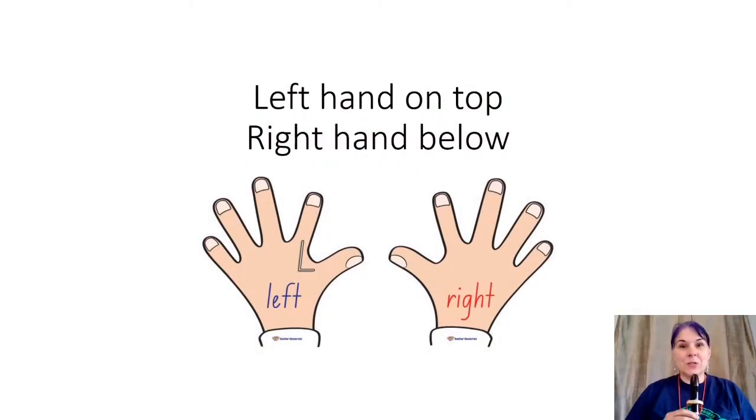Hi otters, it's Mr. Near back again with another recorder video for you. This one is going to be using our notes E, A, and our new note G. Just to remember, we are using our left hand on top. That will look like your mirror, so to you your hand should look like an L. That's the hand that goes on the top and covers the hole.